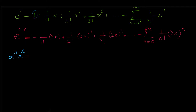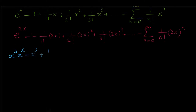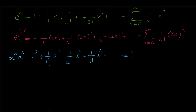So we have to multiply every term in the Maclaurin series of e to the x by x to the 3. If we multiply 1 by x to the 3 we get x to the power of 3; multiplying 1 over 1 factorial times x by x to the 3 we get 1 over 1 factorial times x to the 4; then 1 over 2 factorial times x to the 5; 1 over 3 factorial times x to the 6; and so on. In the general term, we have 1 over n factorial times x to the power of n plus 3, because when we multiply x to the n by x to the 3 we add the powers.